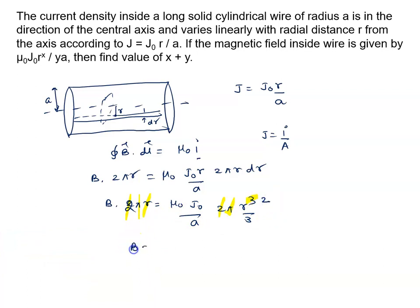Finally what we are getting? B equal to μ₀J₀ into r² upon 3a. This is your magnetic field value.